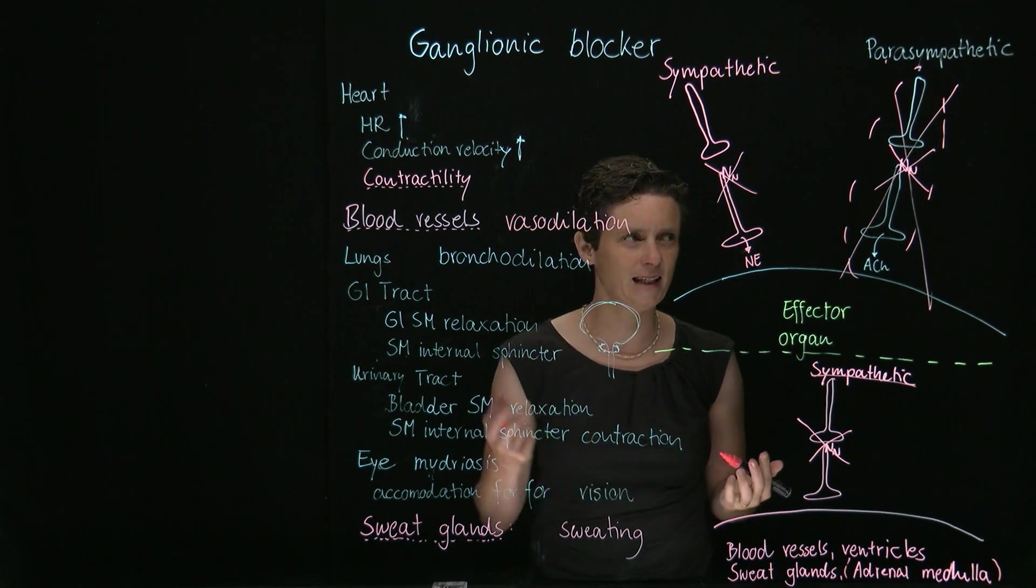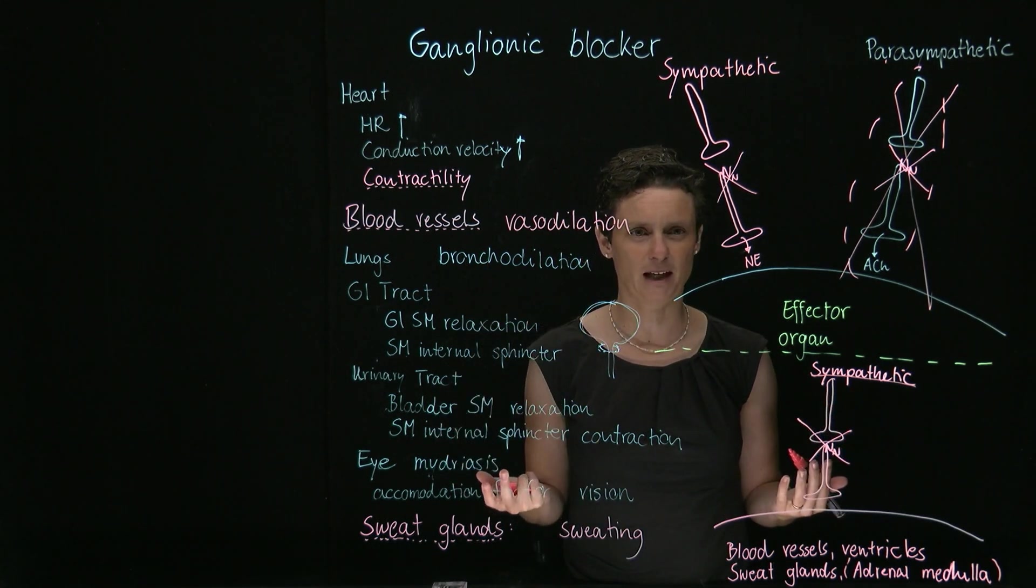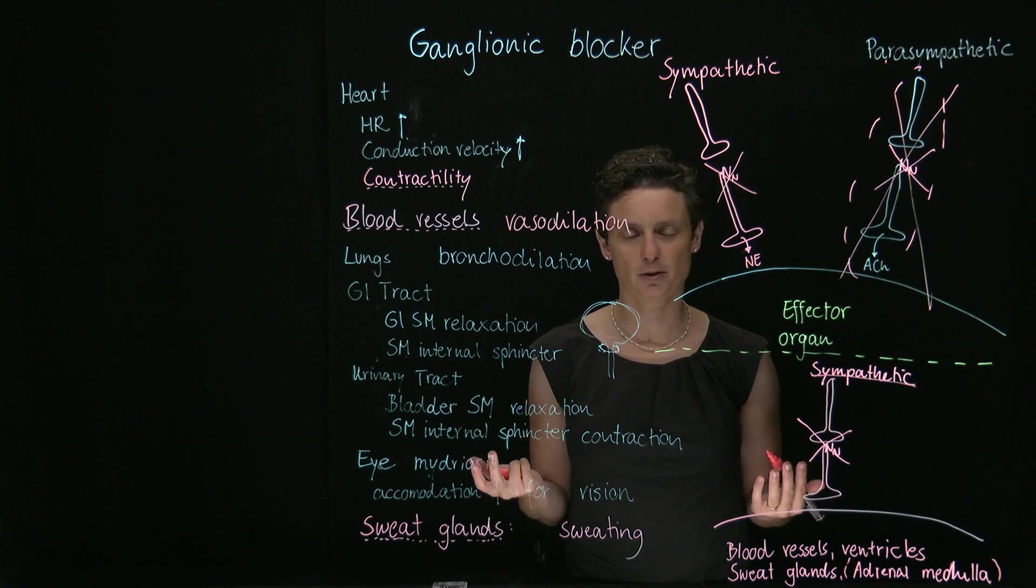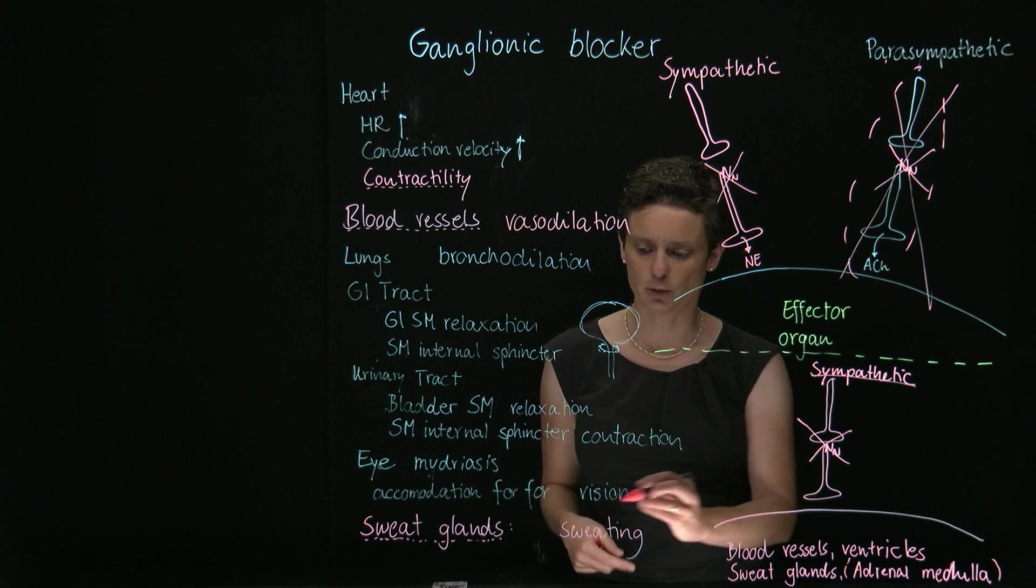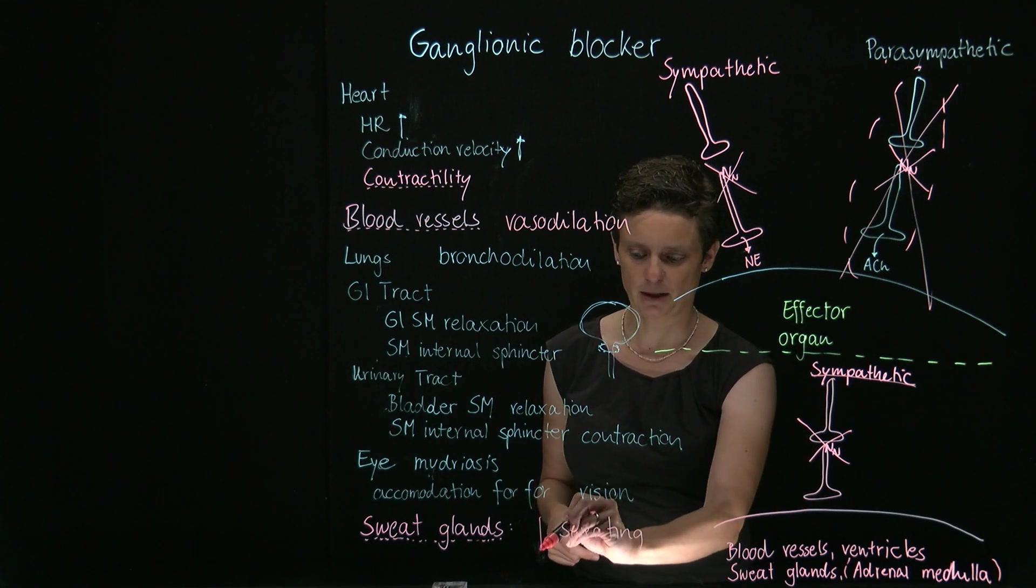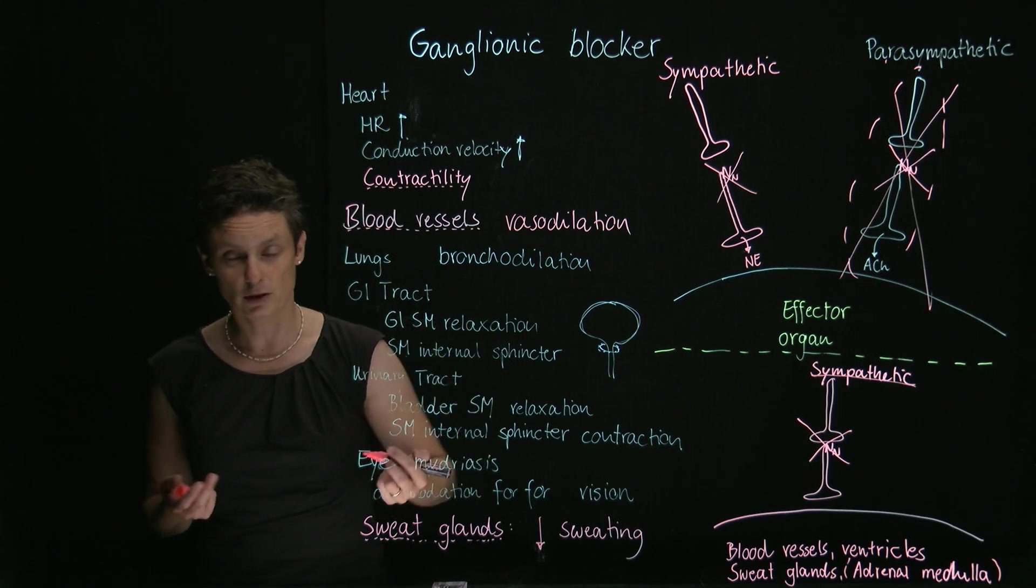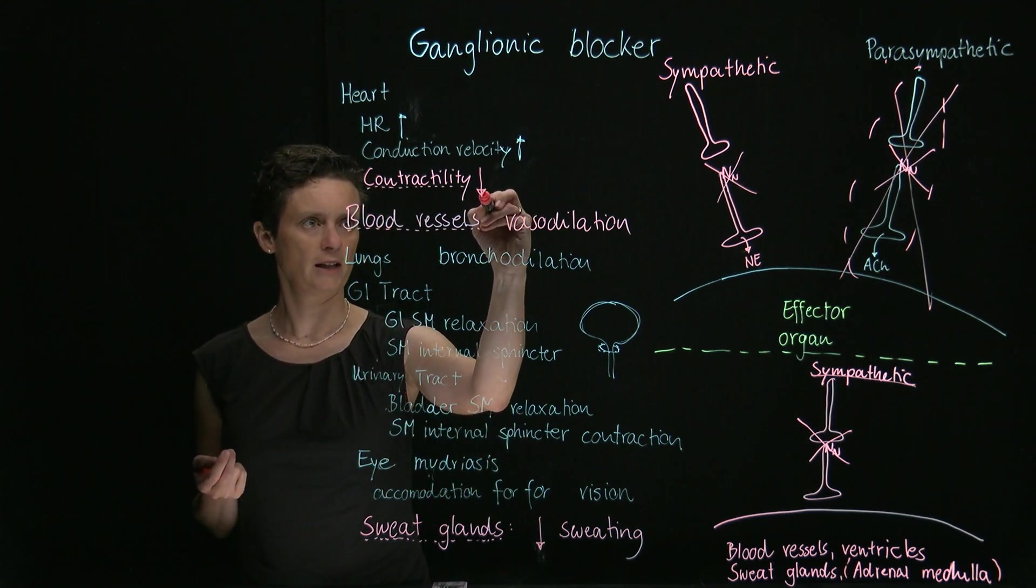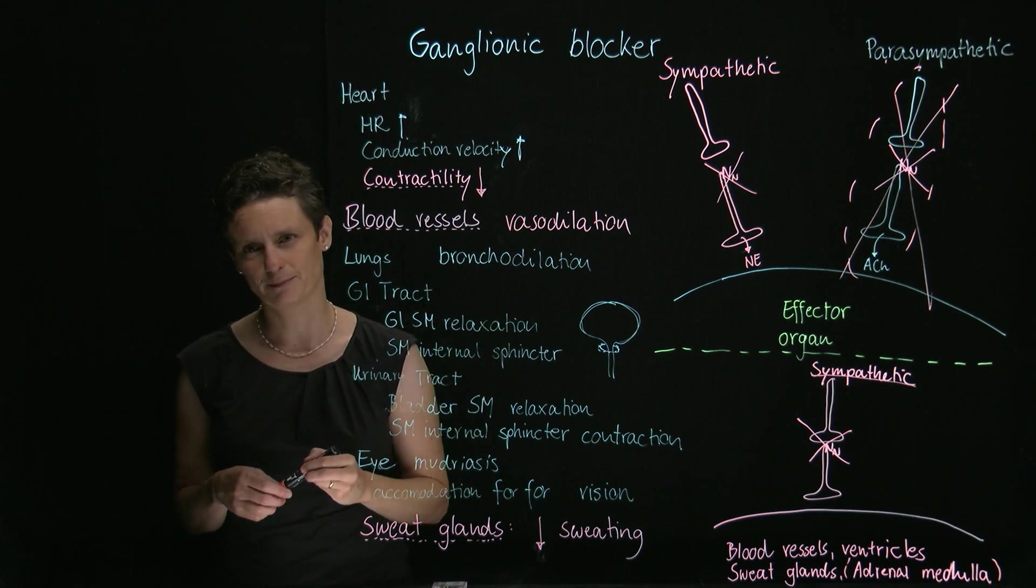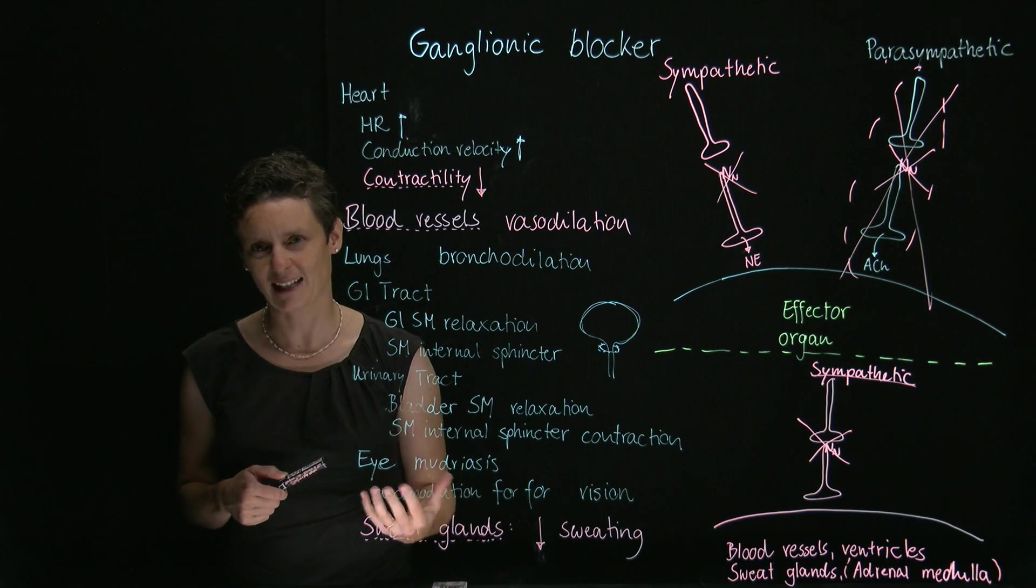These ganglionic blockers were one of the first medications that were used for the treatment of hypertension, so they lower your blood pressure. Sweat glands, you're going to get less sweating because you block sweating. And the ventricles are important for mediating the contractility of the heart, so you're going to block that, so contractility is going to go down. This concludes the video on the different effects of a ganglionic blocker.